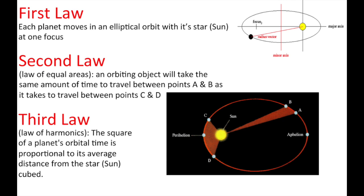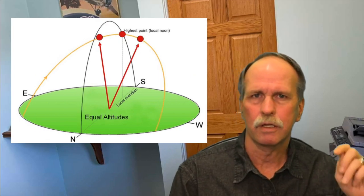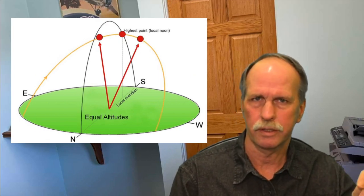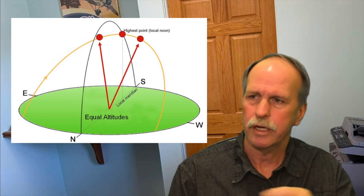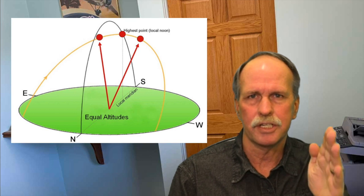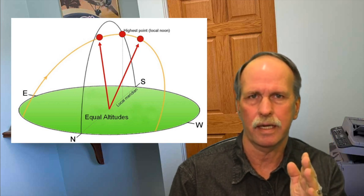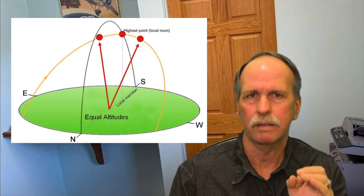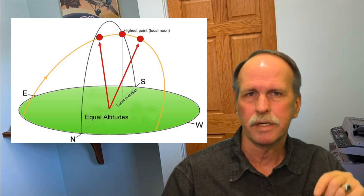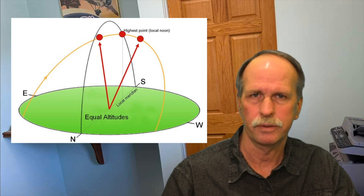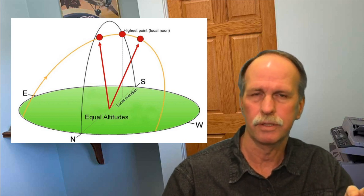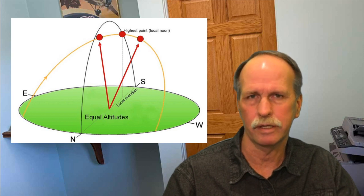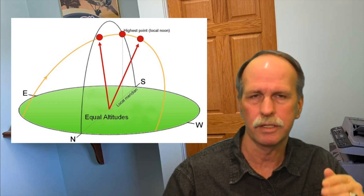To understand why this is, we need to understand the difference between apparent solar noon and mean solar noon. The first thing I want to talk about is something called local solar noon, or apparent solar noon. If you are on a location on the earth, and you look up, when the sun is at its highest point during the day, it will be directly due south of you, and that will be called apparent local solar noon. Now, if you take the number of hours, minutes, and seconds from one local solar noon to the next day at local solar noon, and average that out over a year, you get something called mean solar noon.